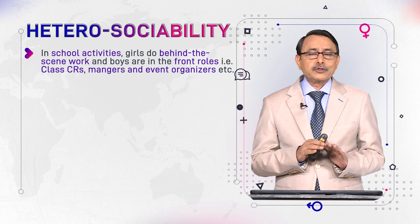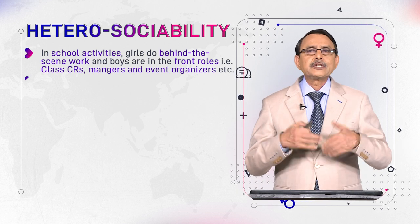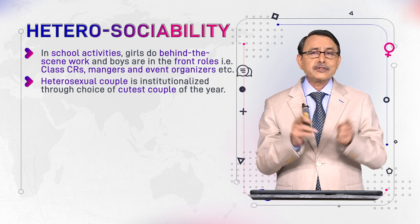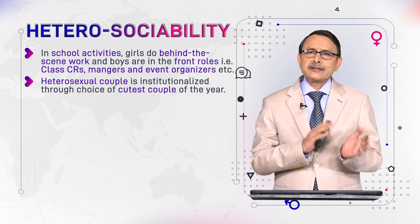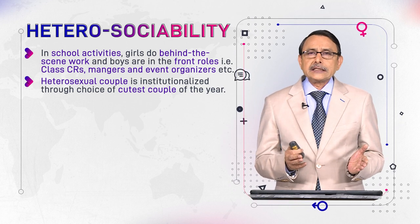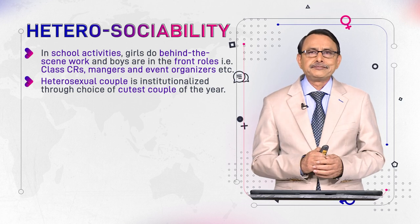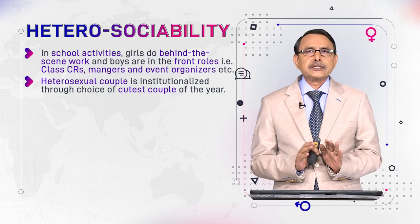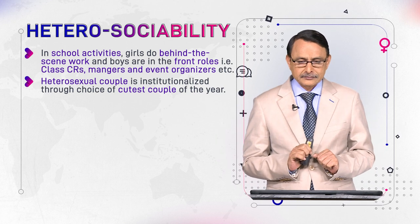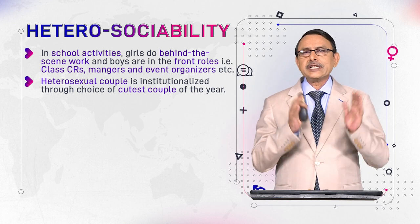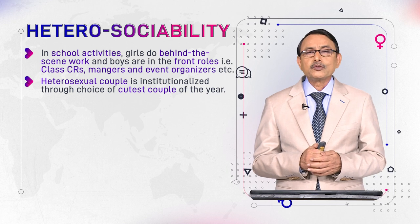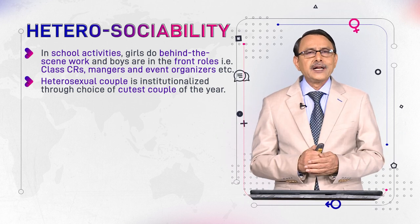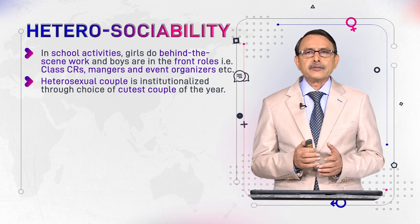Everything that happens in school matches with the aspiration of society. Another activity is the heterosexual couple. This word 'couple' is very important — in a couple, one is male and one is female, and heterosexuality is desired by culture and society. How this feeling of being a couple is institutionalized can be seen through competitions like 'cutest couple of the year' held in schools.